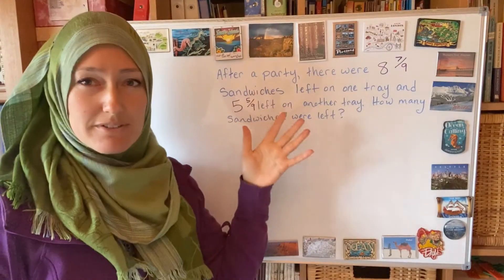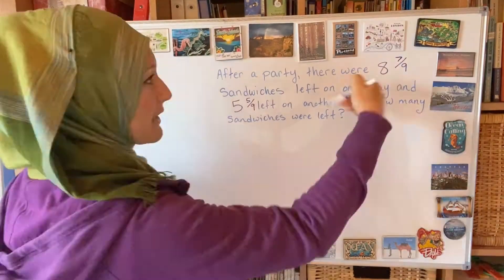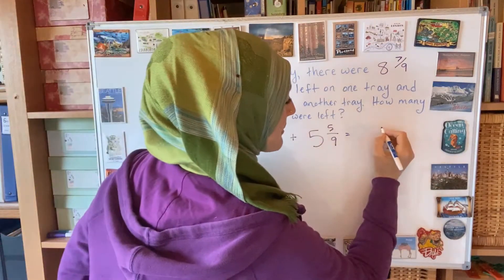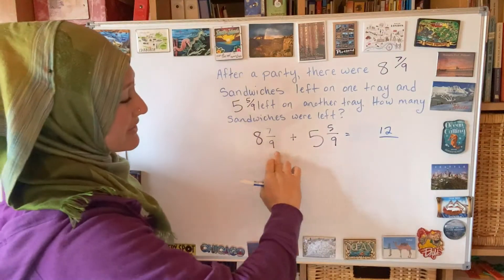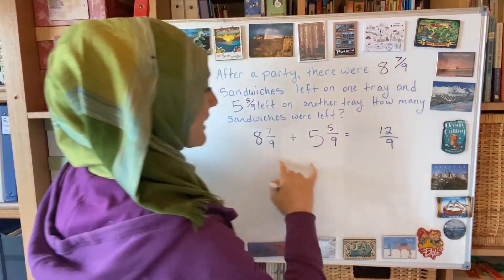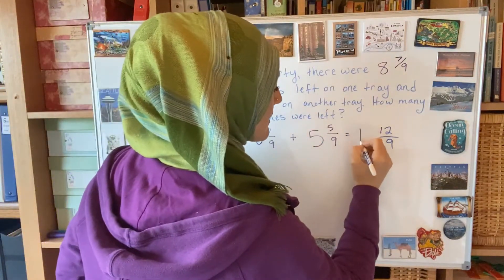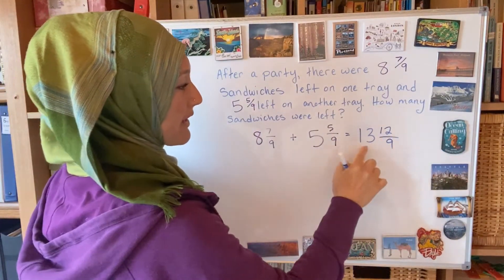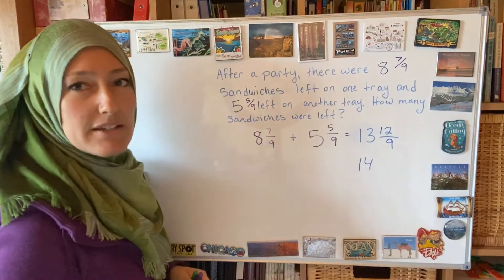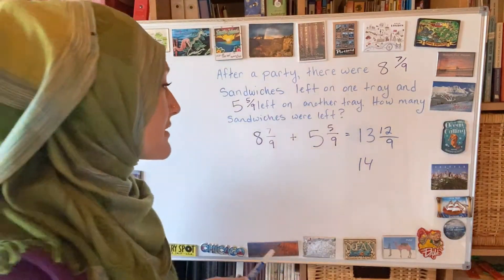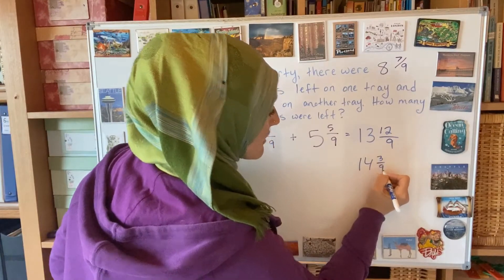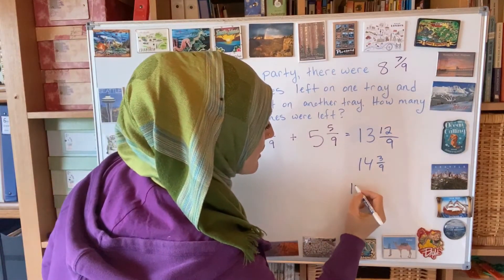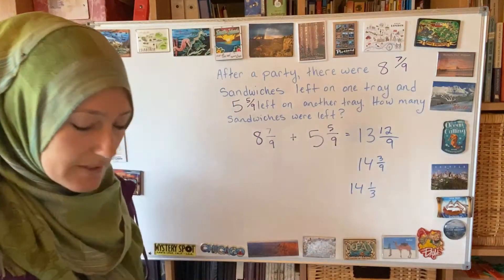We'll do this one without a model — same question, just adding the fractions. Start with the fraction first. Numerator: 7 plus 5 is 12 — put that over here. The denominator stays the same, it's a 9. And if I add the whole numbers: 8 plus 5 is 13. I'm not done yet — I need to take out my wholes from this amount. So 9 ninths will come away, and I'll give it here — that's going to become a 14. If I take 9 away from 12, what's left? 3. So I have 3 ninths — but I'm not done because I have to simplify it. This becomes 14 and 1 third.